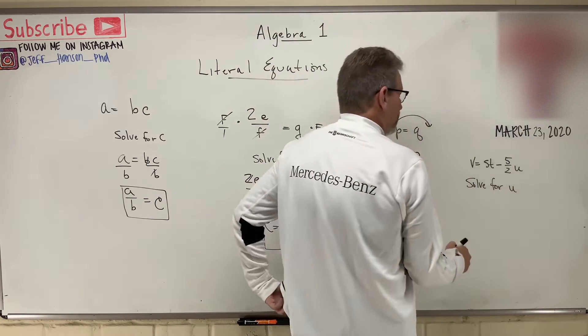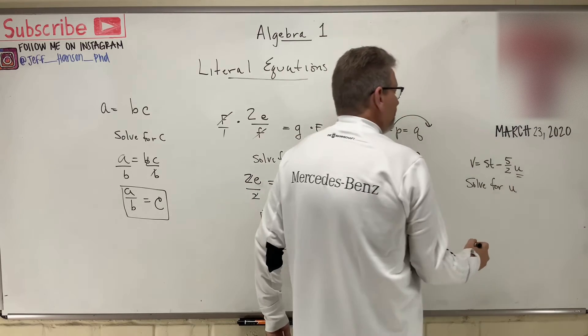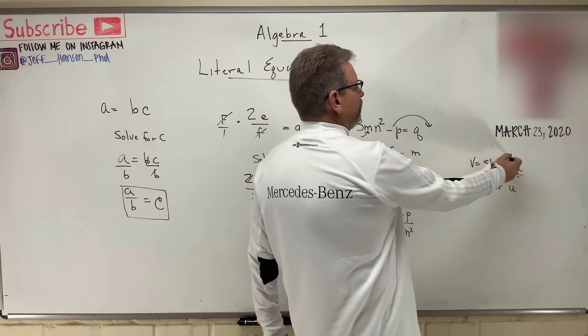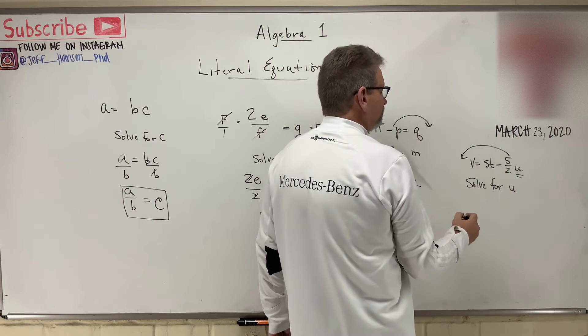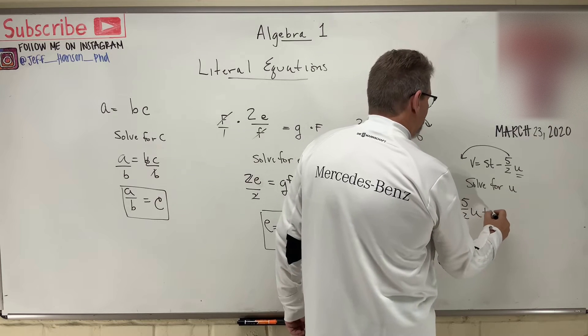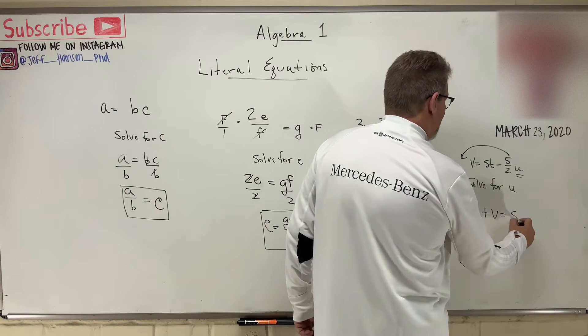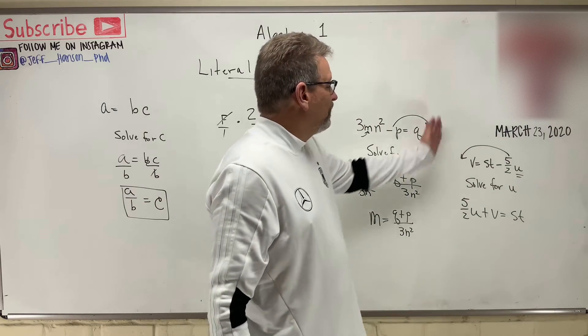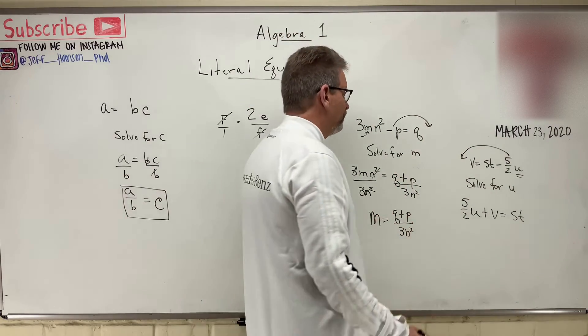I'm looking for that guy. For you, I want to solve for that guy. So, you know what? I'm going to make him positive. I'm going to move this to the other side. Right? And so, 5 halves U plus V is equal to ST. Right? He's negative on that side. When I move him to the other side, he becomes positive. Right? Okay?